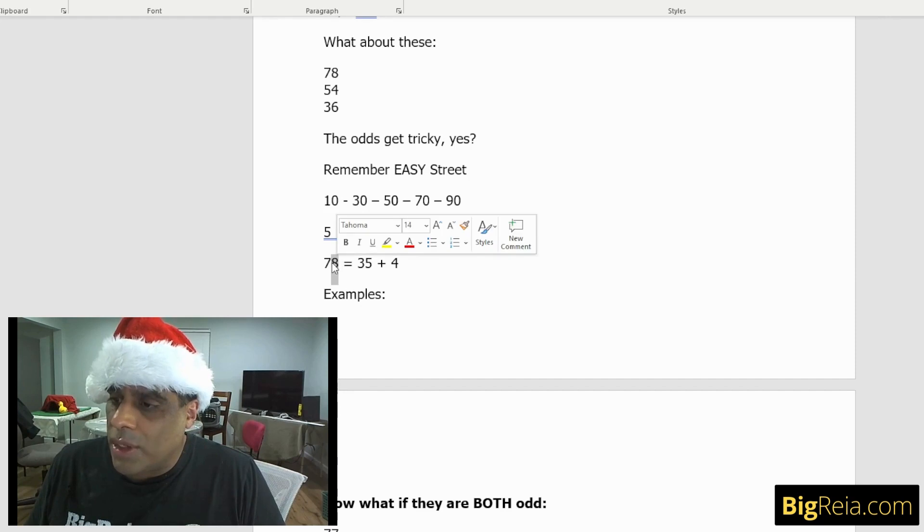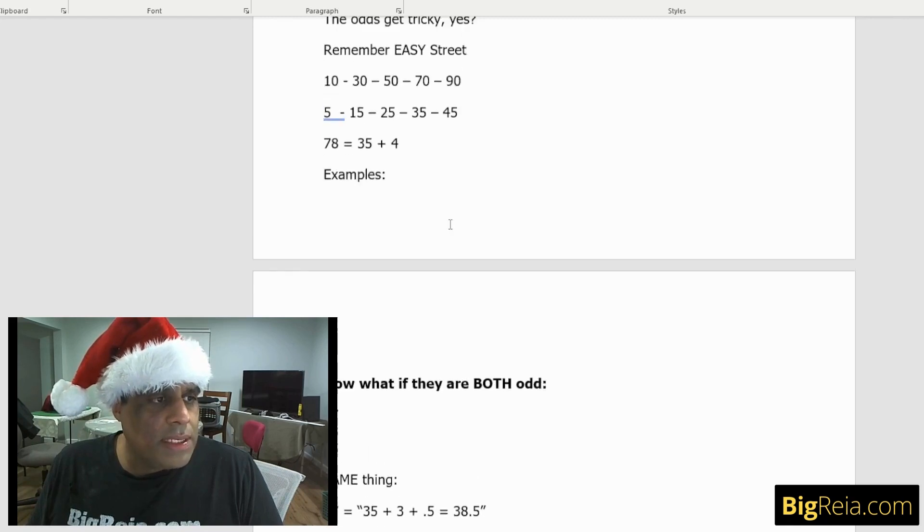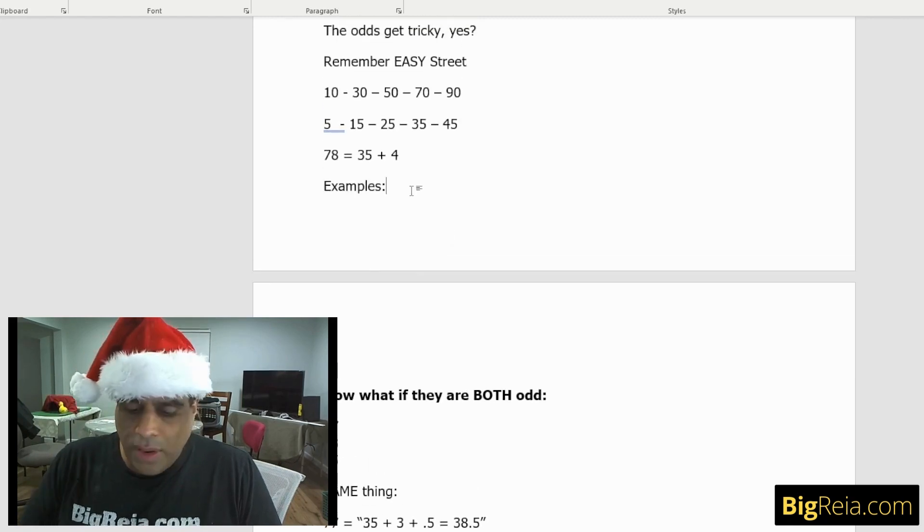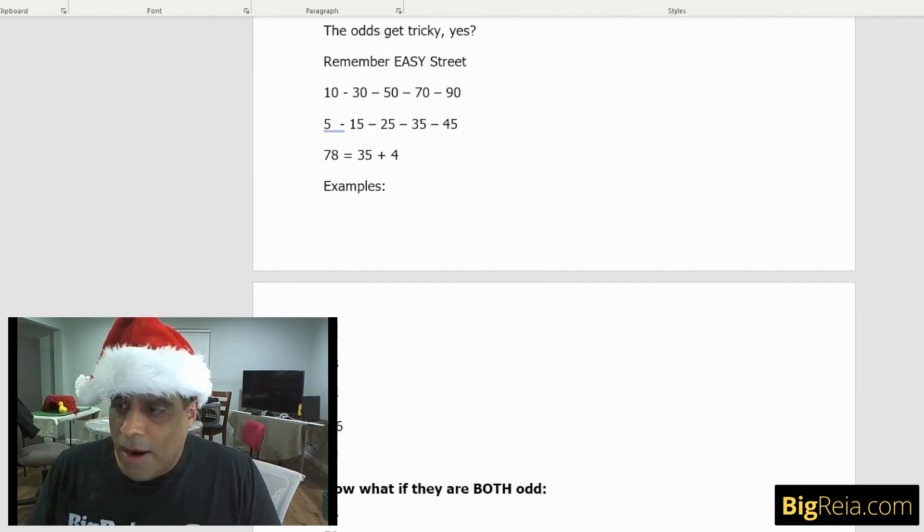35 plus in this case, four. 35 plus four, because we're going to look at that number. So when you look at this number on the left, it's going to be 35 plus the number on the right is four. So what if they are both odd?